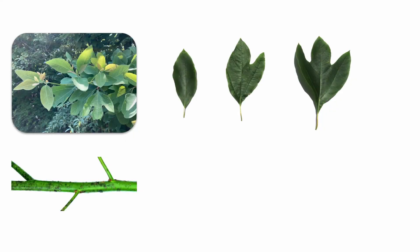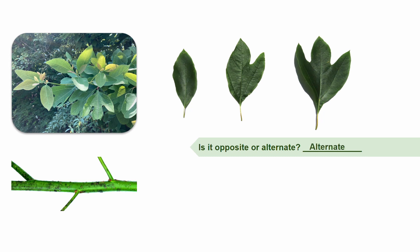Alright, just for fun, we're going to do an example. Here we have an unknown tree species. We're going to work through a series of questions to review what we've learned, and together we will identify this tree. There are six main questions you should keep in mind when you're trying to identify a tree. Is it opposite or alternate? Based on the section of the twig shown here, we can safely say that our tree is alternate because the leaves are attached in an alternating pattern.